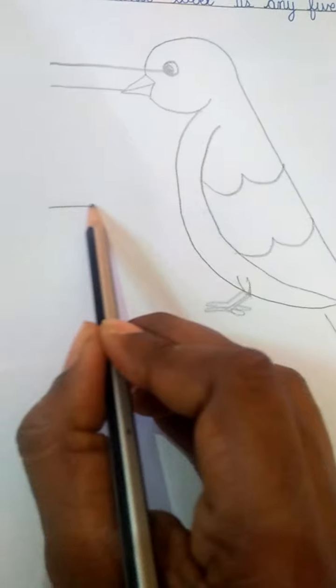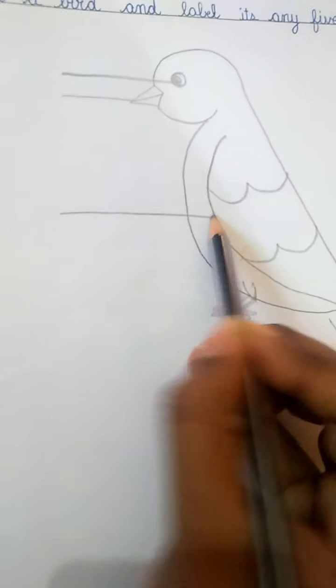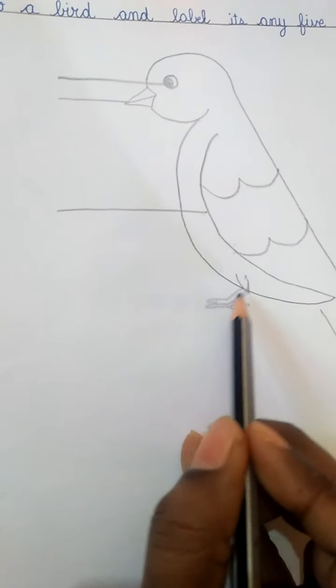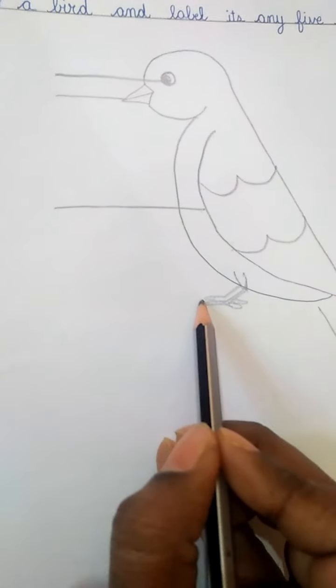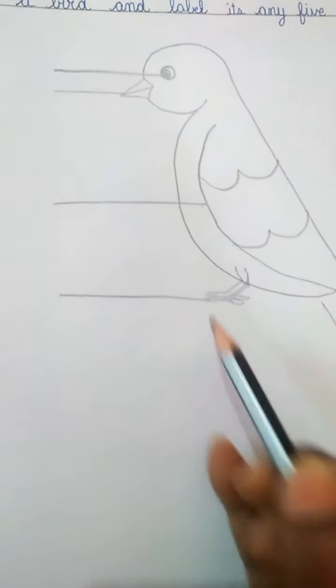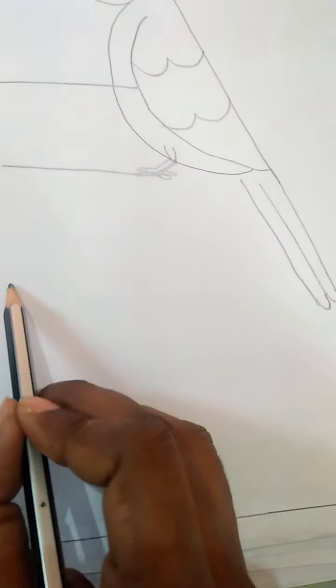Now the claws. See, this part is the claw. We are going to show it like this. And the last one is the tail. Now let's draw one more line to show the tail.